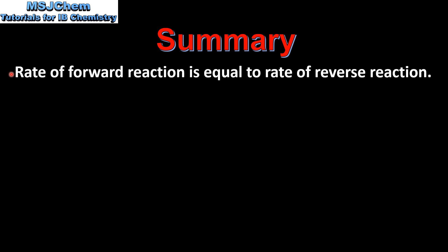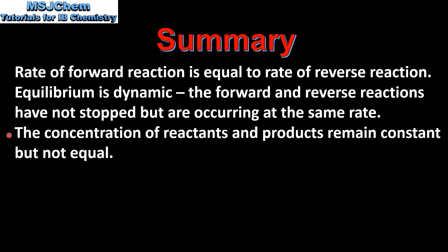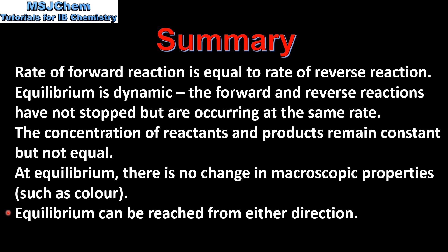Let's end with a summary. Dynamic equilibrium is when the rate of the forward reaction is equal to the rate of the reverse reaction. Equilibrium is dynamic — the forward and reverse reactions have not stopped but are occurring at the same rate. The concentration of reactants and products remain constant but not equal. At equilibrium there is no change in macroscopic properties such as color, and equilibrium can be reached from either direction.